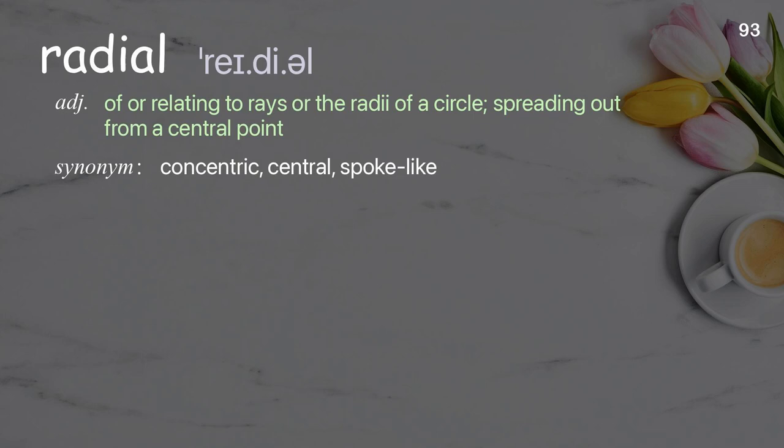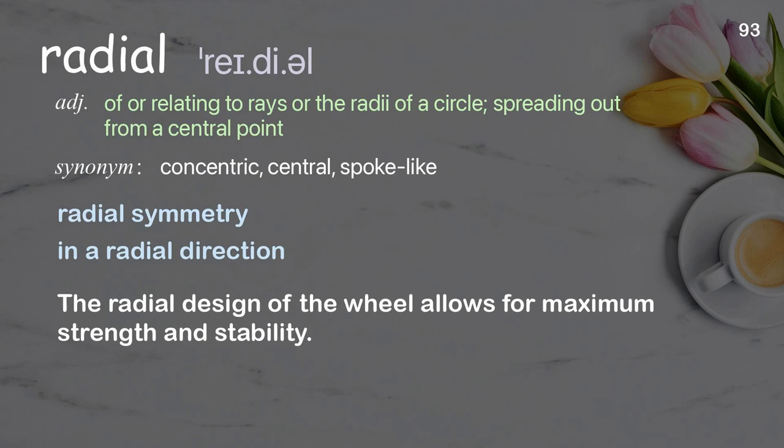Radial: of or relating to rays or the radii of a circle; spreading out from a central point. Examples: radial symmetry, in a radial direction. The radial design of the wheel allows for maximum strength and stability.